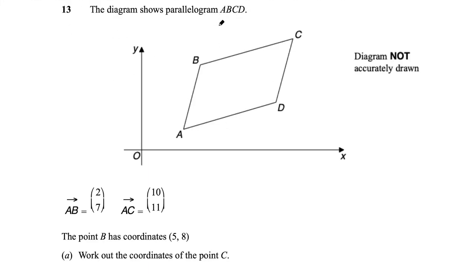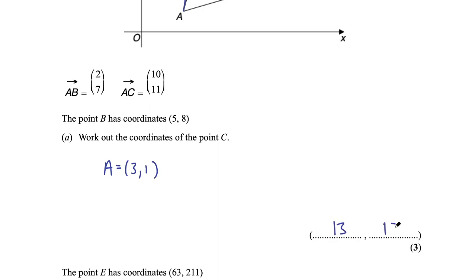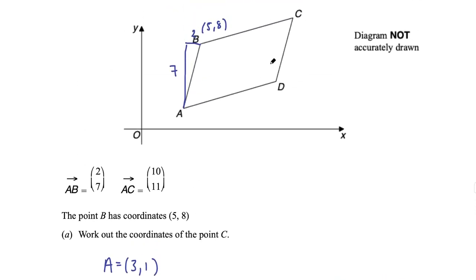Question 13: parallelogram ABCD with vector AB = (2, 7), vector AC = (10, 11), and point B at (5, 8). Find point C. From B subtract the vector AB to find A: (5−2, 8−7) = (3, 1). Then add vector AC to A: (3+10, 1+11) = (13, 12). So C has coordinates (13, 12).